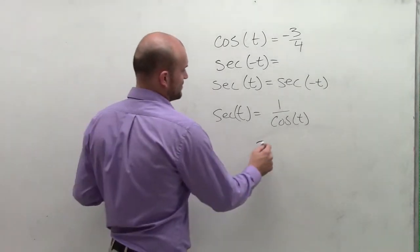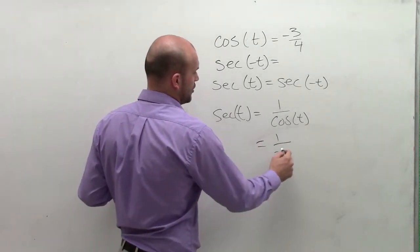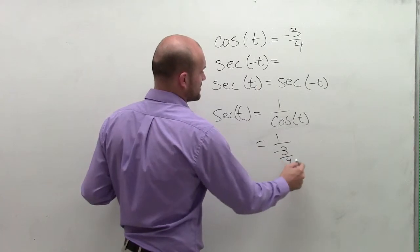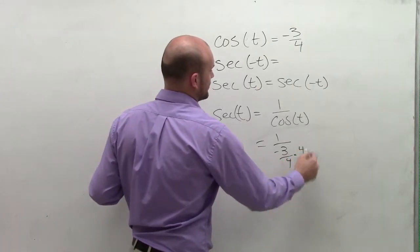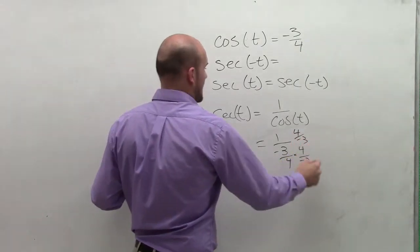So therefore, what I'm going to do to evaluate for this, I'm just going to put 1 over negative 3 fourths, multiply by the reciprocal.